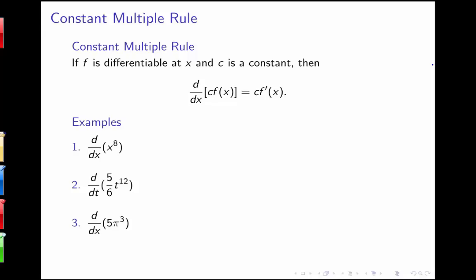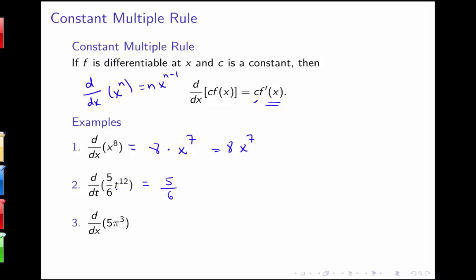A couple more rules we need. If f is differentiable at x and c is a constant, then the derivative of c times f is c times f prime of x. So anytime a constant shows up, we can pull it out in front and then take the derivative of what remains. For example, d/dx of x⁸ is 8x⁷. And d/dt of (5/6)t¹² equals (5/6) times 12t¹¹, which simplifies to 10t¹¹.